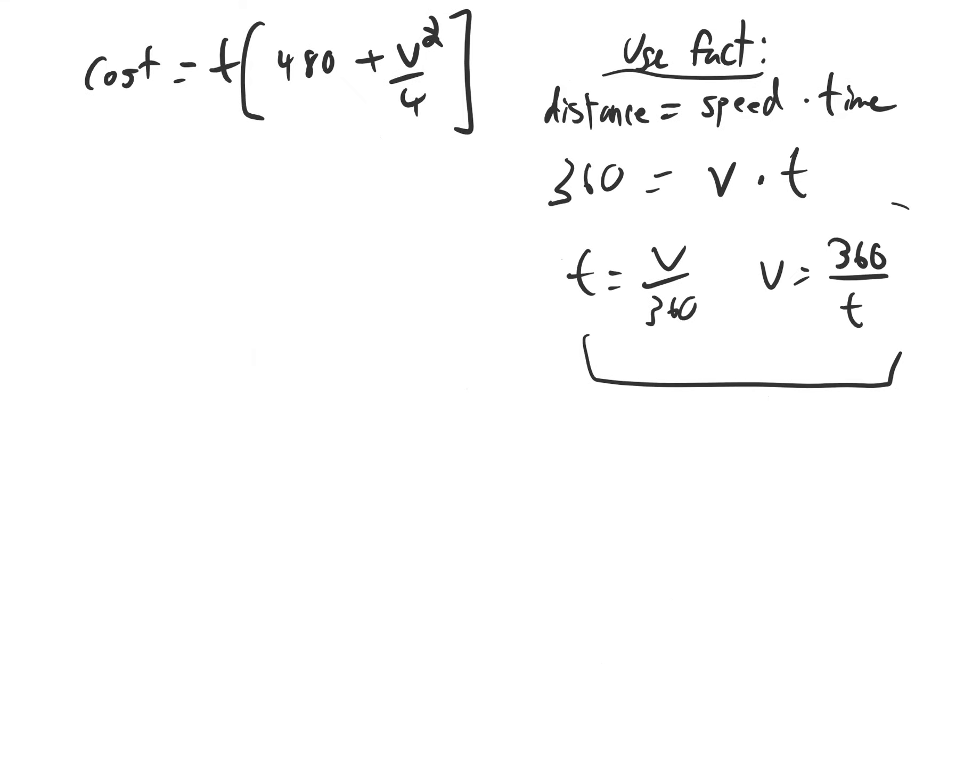I'll use the fact that v can be written as 360 over t to rewrite our equation with t as the only variable. So I get cost equals t times 480 plus, well dividing by 4 is the same as multiplying by 1 fourth. So that's 1 fourth v squared. And what goes in for v? 360 over t. This is an improvement.